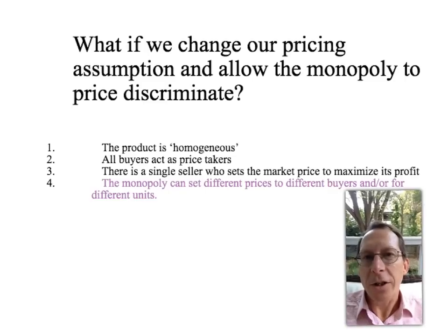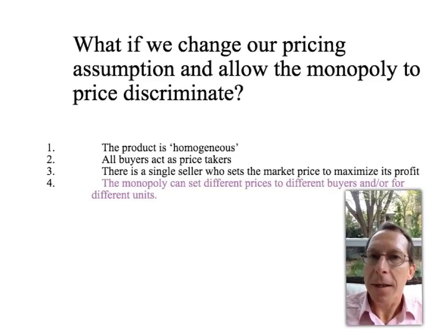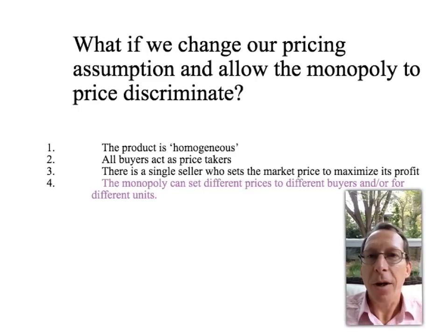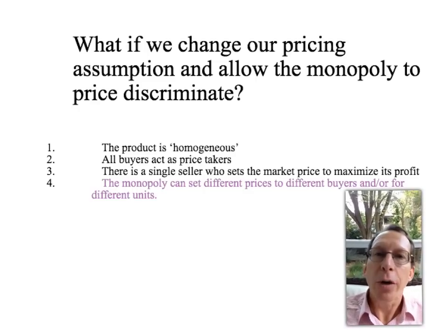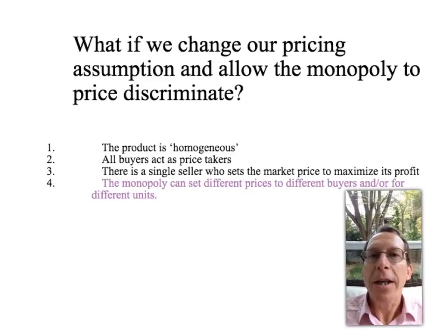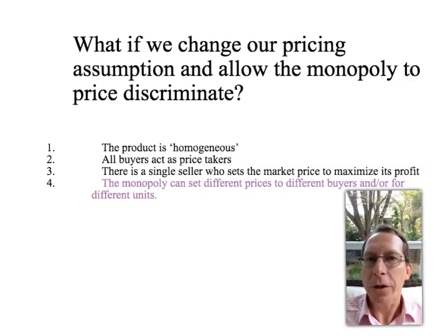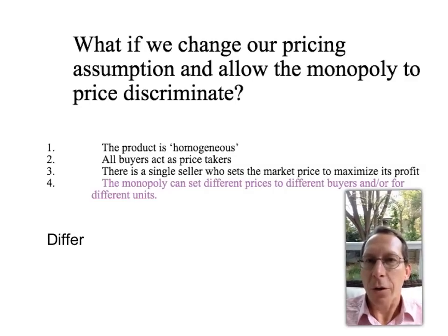Price discrimination just means that the monopoly is going to be selling the same units at different prices, depending on who the buyer is and/or how many units the buyer has already purchased. So there's two basic forms of price discrimination.